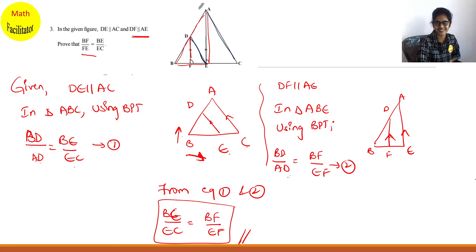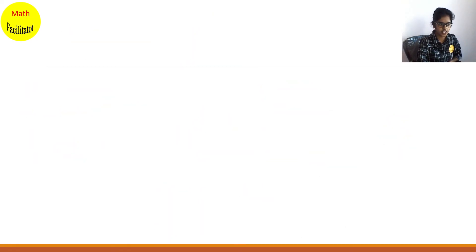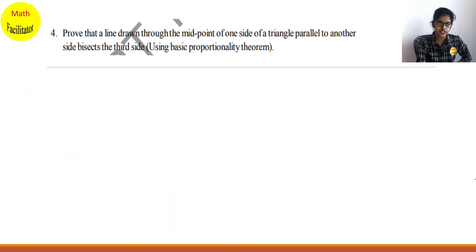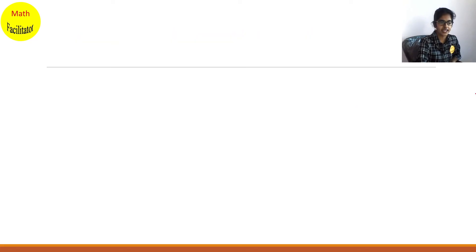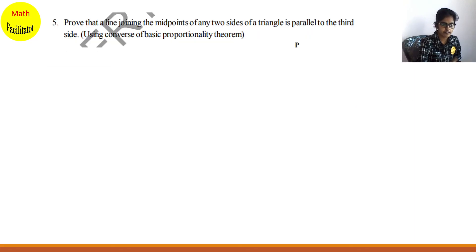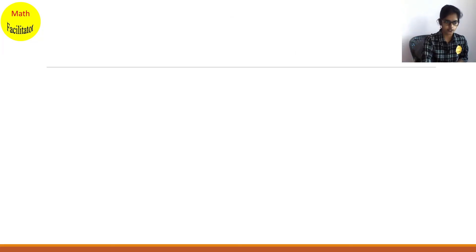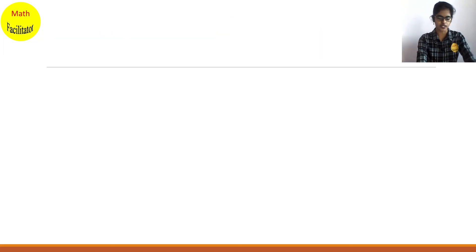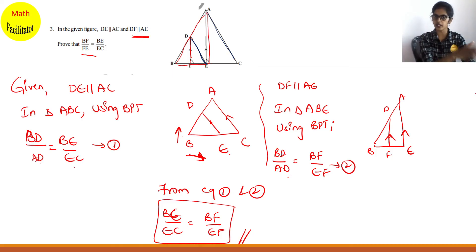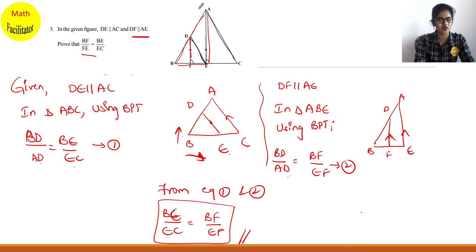Question 4 is about proving that a line drawn from the midpoint of one side of a triangle parallel to another side bisects the third side. Question 5 is also a similar question. I'll take these questions in the next class. Questions 1, 2, and 3 are similar — do practice them once again. I'll meet you in the next class. Thank you.